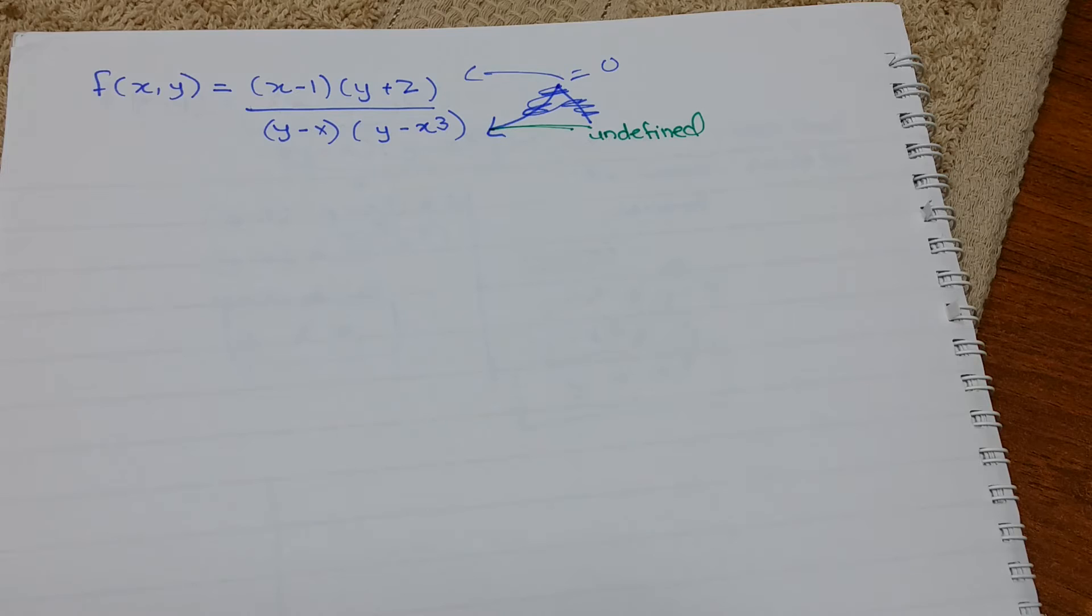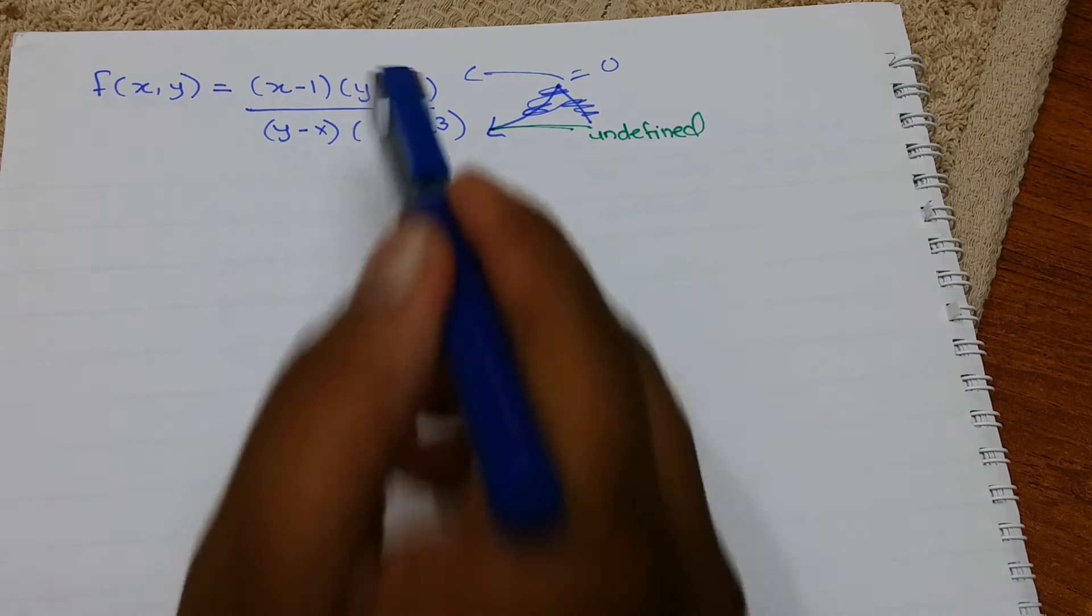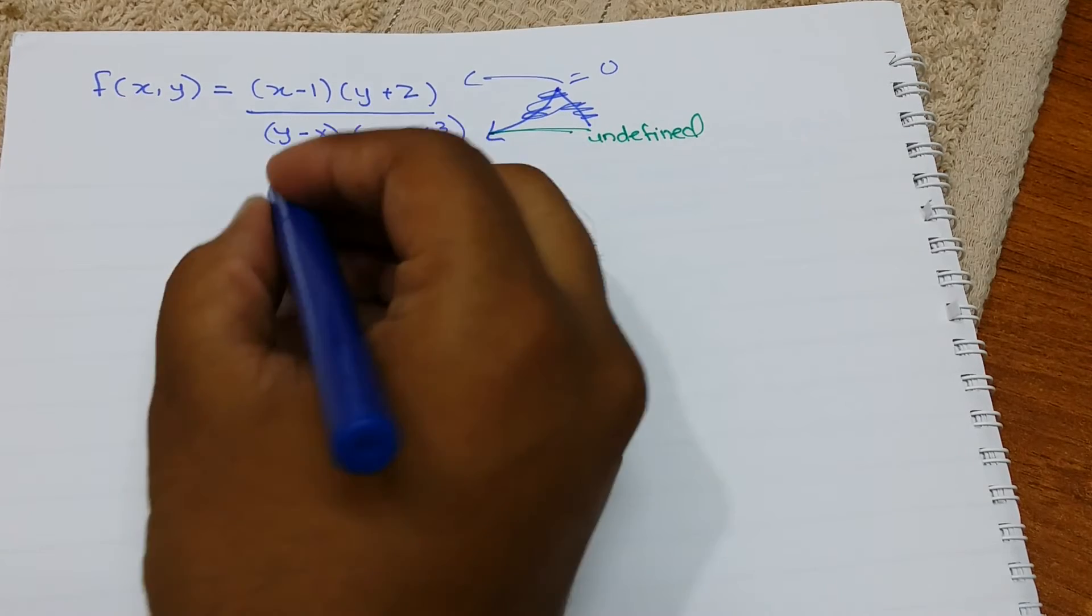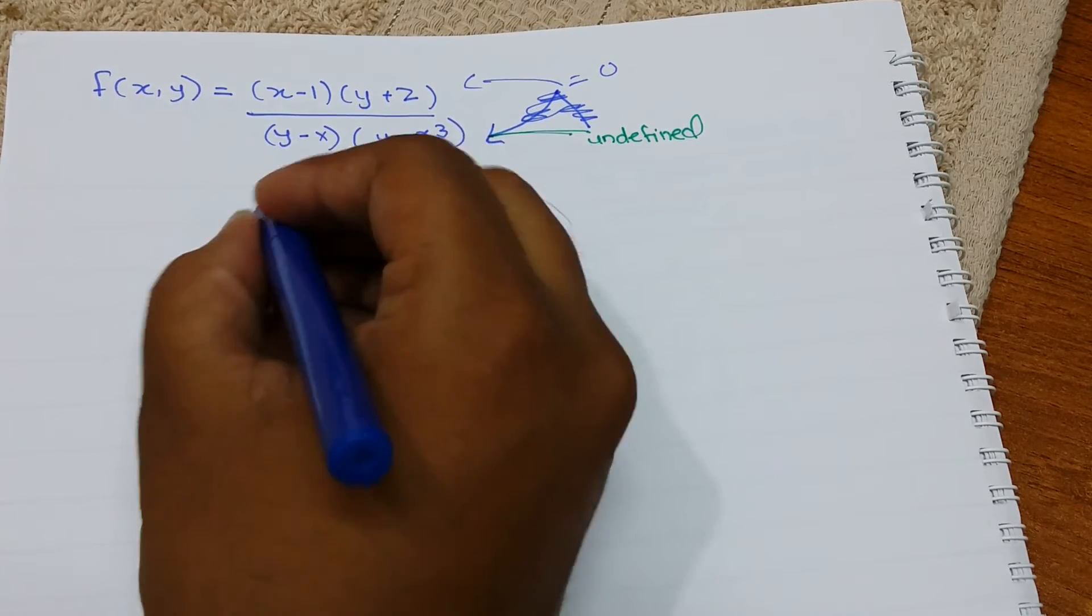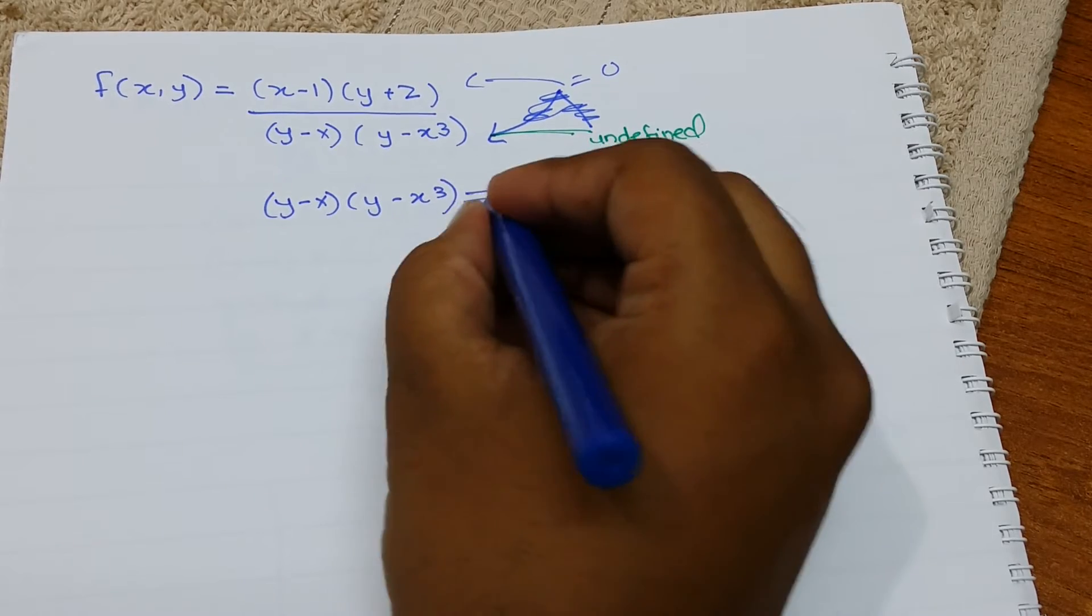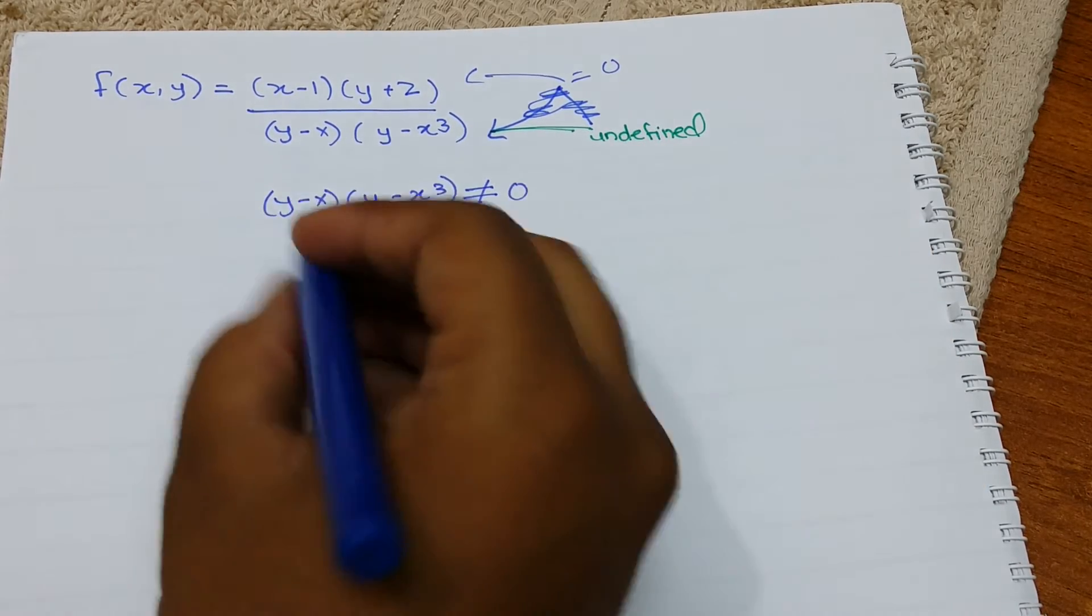So just in case you are imagining what is happening right now, we are finding the domain of this function. Now this should not be 0, so we are going to write (y-x)(y-x³) not equal to 0.